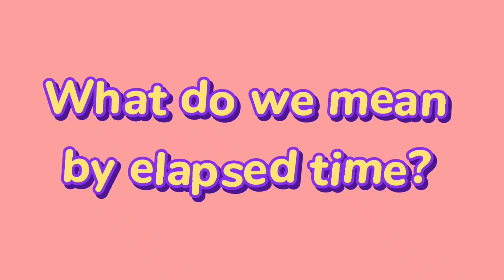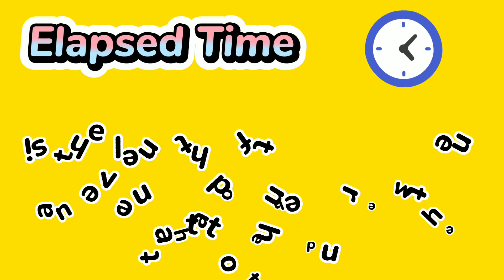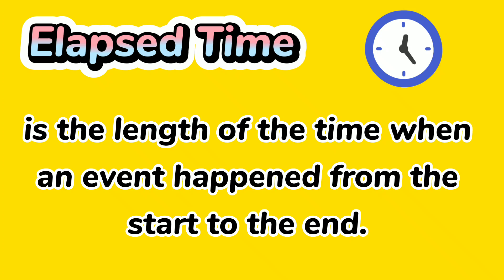What do you mean by elapsed time? Elapsed time is the length of time when an event happened from the start to the end.